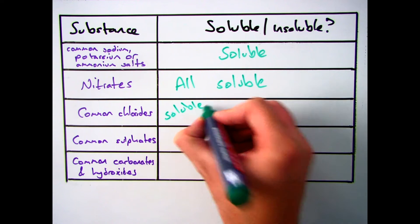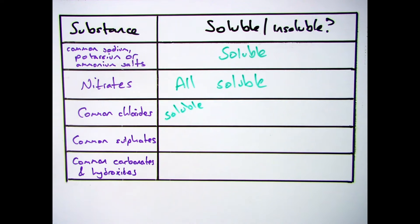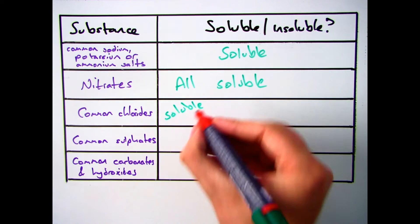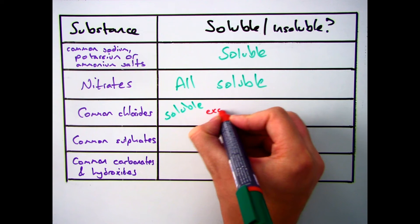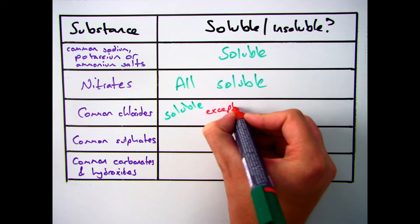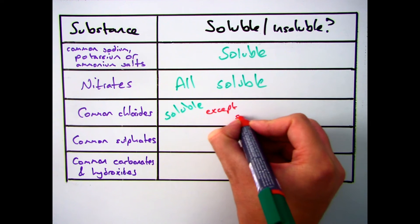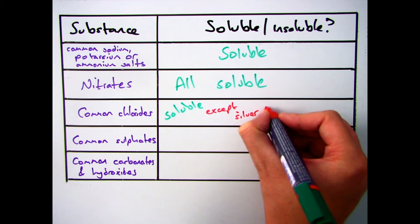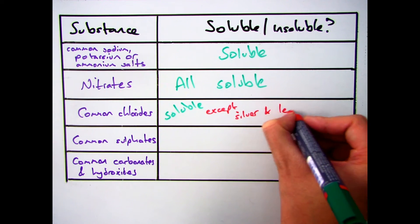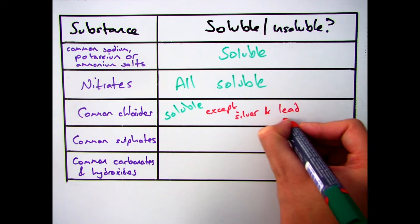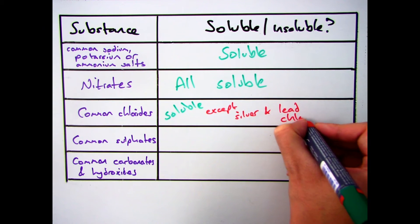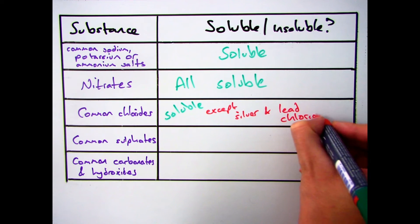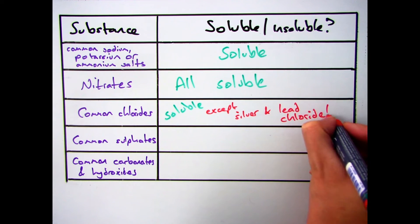Common chlorides - most chlorides are soluble, however there are a few main exceptions that you need to know, which are silver and lead chloride. So any other chloride you're given other than silver and lead is going to be soluble. Those are the only two that will form a precipitate.